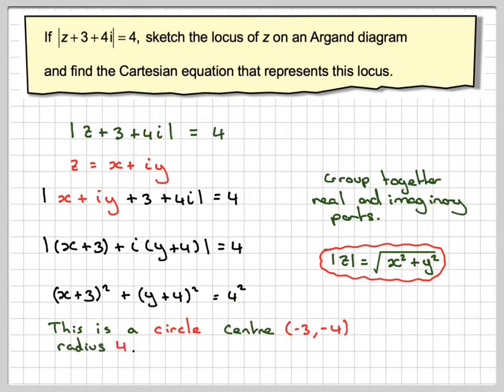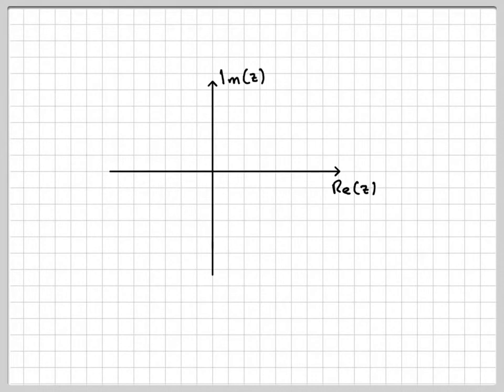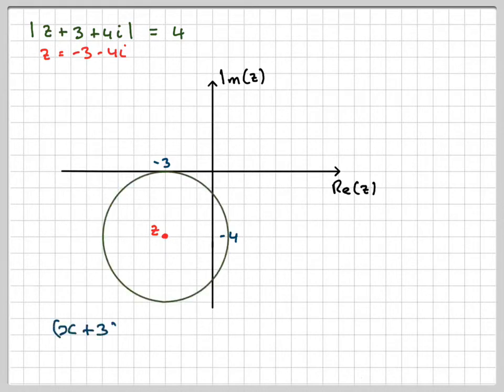So it's now very easy to represent that on an Argand diagram. So you've got real z, imaginary z. The point where we center will be z is minus 3 minus 4. So it's minus 3 minus 4, that will be that point there. So it's minus 3 minus 4i, and then there will be a circle with radius 4 units.